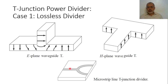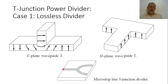Another configuration for the T-junction is the printed line structure. Assuming a microstrip line, the feeding microstrip line is divided into two branches: port 2 and port 3. The polarity of the excitation would be the same as the polarity of the two outputs, because both go from the ground plane to the printed line. Now, it is required to study how to design such a lossless T-junction power divider.